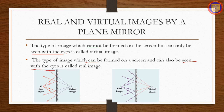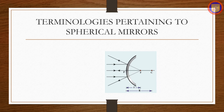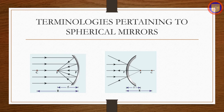Spherical mirrors: a spherical mirror is a part cut from a hollow sphere. Spherical mirrors are generally constructed from glass, with one surface silvered. Reflection takes place at the other polished surface. If reflection takes place at the convex surface it is called a convex mirror, and if reflection takes place at the concave surface it is called a concave mirror.